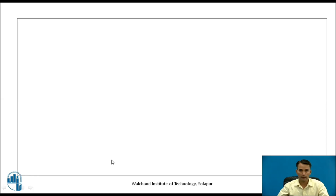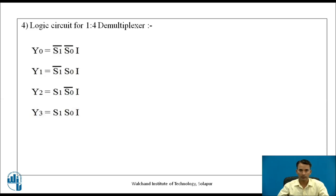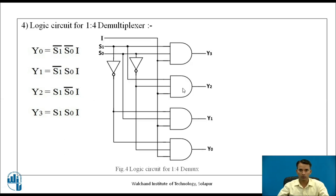In the next step we draw the logic circuit for the 1-to-4 demultiplexer. To draw the logic circuit we use the output equations. Based on these 4 equations, 4 AND gates are used to produce the 4 outputs Y0, Y1, Y2, and Y3, with a common single input data line i and select lines S1 and S0.